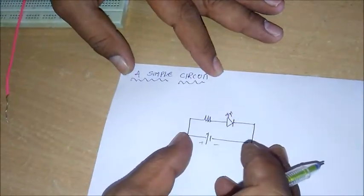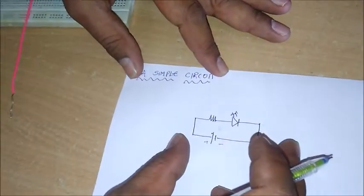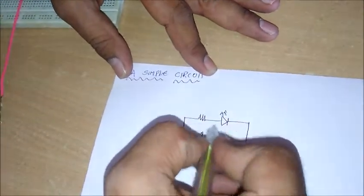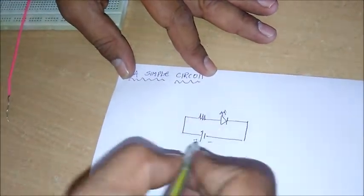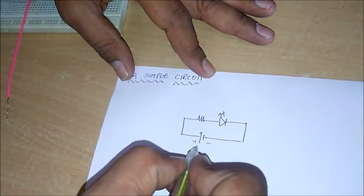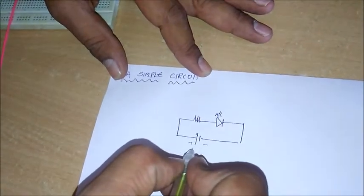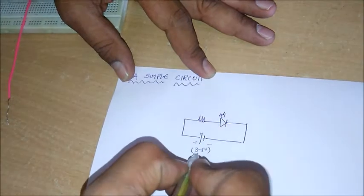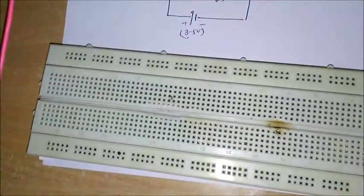So this is a small circuit. Based on this circuit with this connection, we can show that the LED is going to glow. Here I am going to give the input voltage as three to five volts and now we'll see how to connect this one on the breadboard.